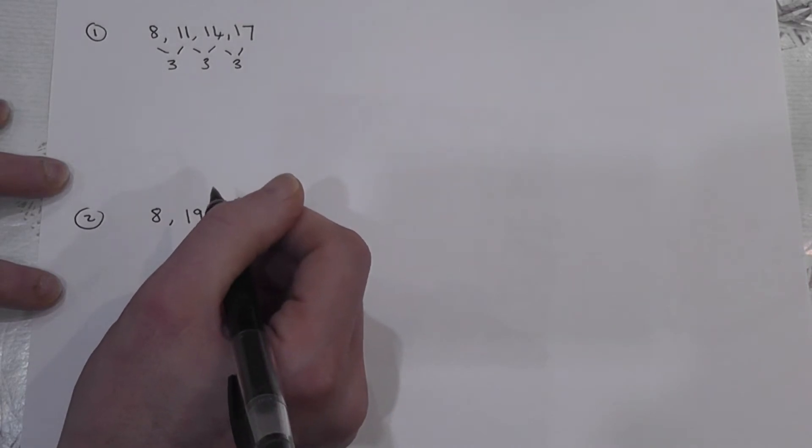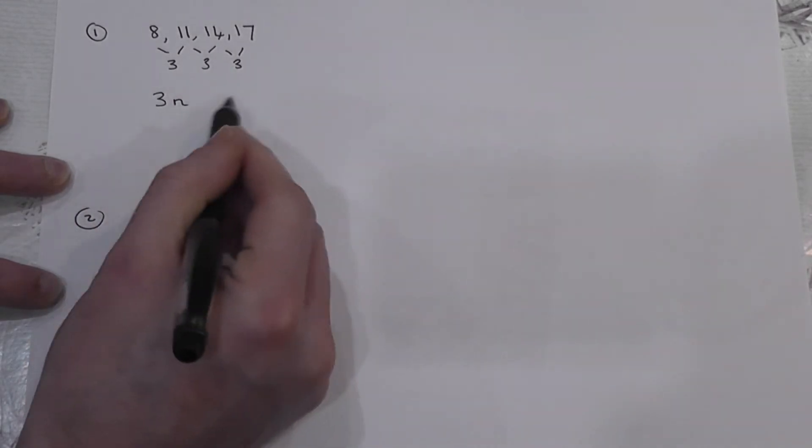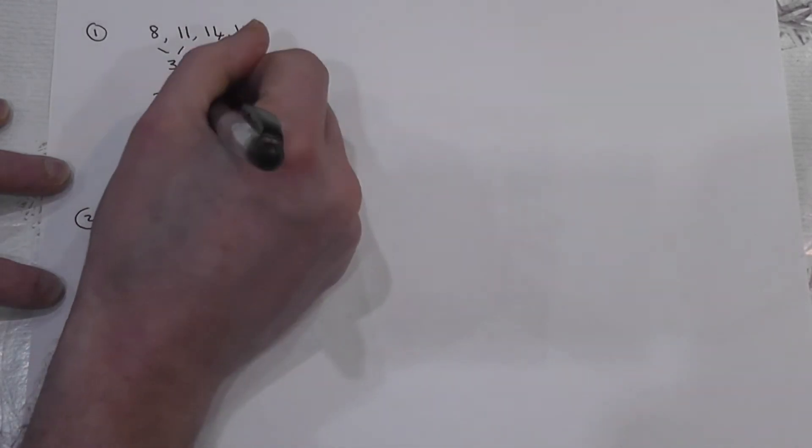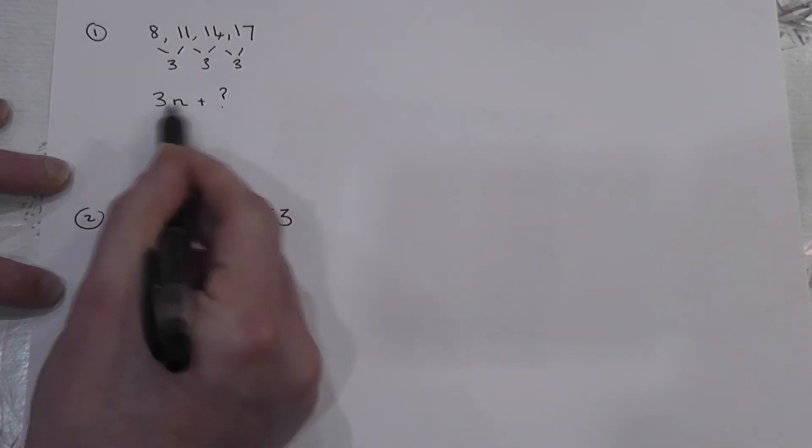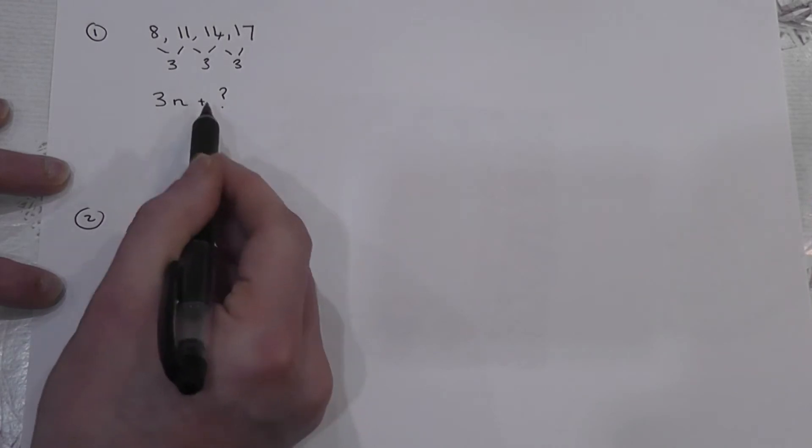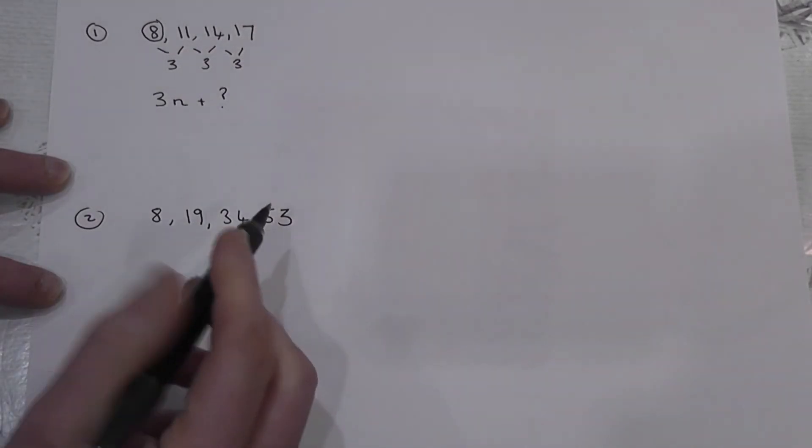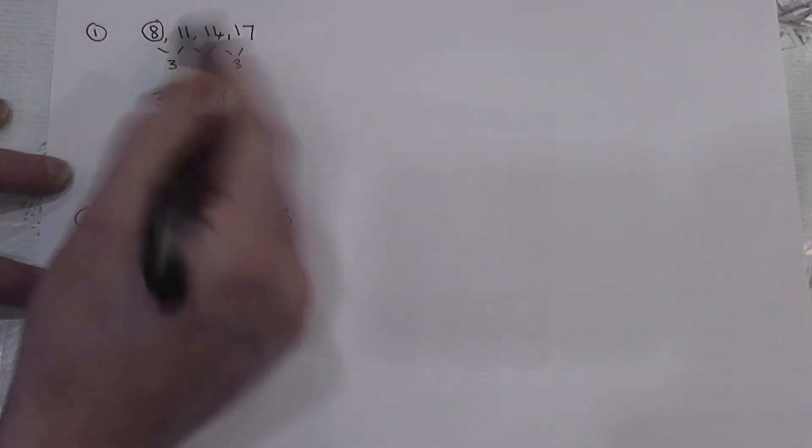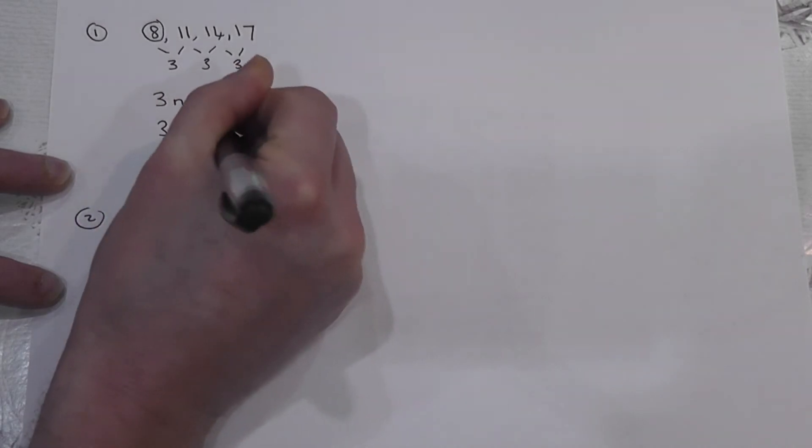This is called a linear sequence and this means its formula is of the form 3n, this is the common difference, plus or minus some other number. And the trick to find the other number is that these two numbers here, the 3 and the question mark, always add or subtract to make the first term in the sequence. Now the first term is 8, 3 plus something is 8, 3 plus 5 is 8, so the unknown number is just 5.